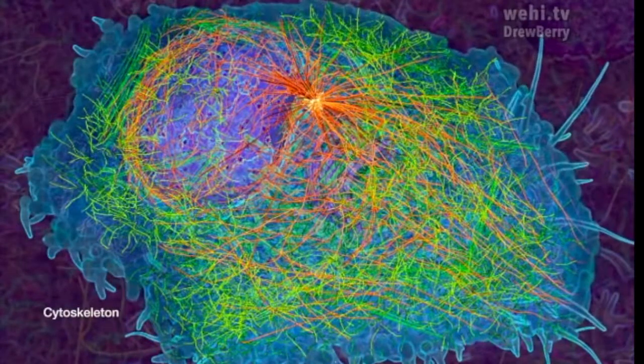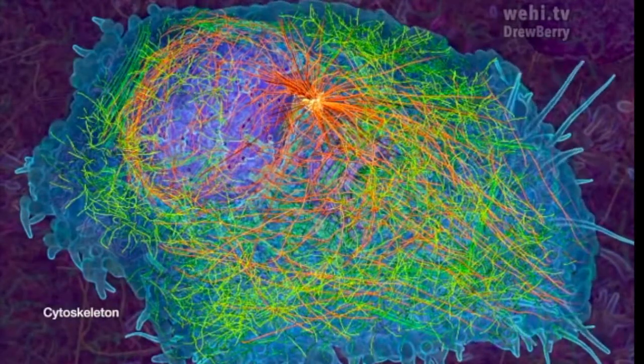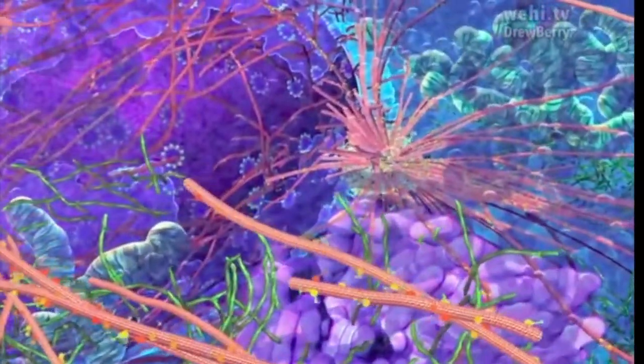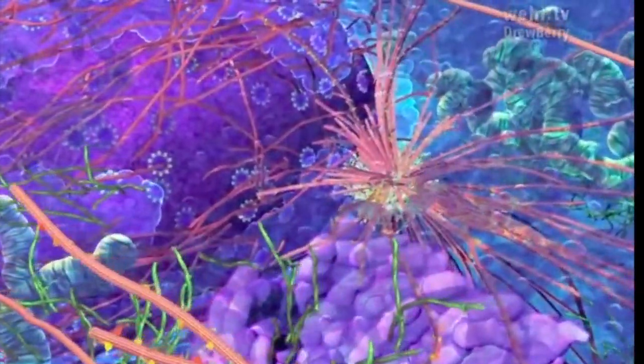Cytoskeleton, they make up the centrioles in the cell, they are the base of both the flagella and cilia of a cell, and they function as the pathway that the transport vesicles move along.